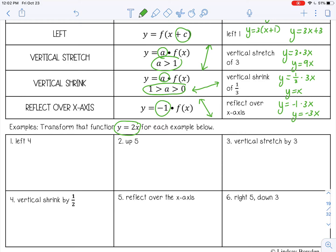So if I want to move left four, remember left, you actually add four in parentheses. So two parentheses x plus four. And then you can simplify that by distributing the two. So 2x plus eight.